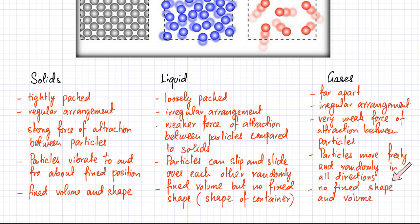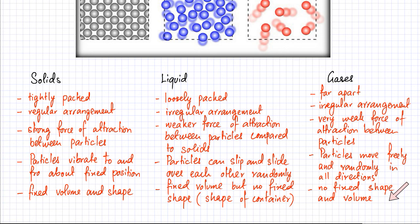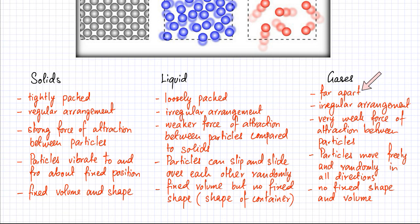Gas particles don't have any fixed shape or fixed volume — both the shape and the volume are determined by the container. Gases can expand and fill any volume they are put into. For example, if you release gas in a room, it spreads out and occupies the entire room. Gases can also be compressed because the particles are far apart with many spaces between them, so they can be pushed closer together. So gases have no fixed shape or fixed volume.